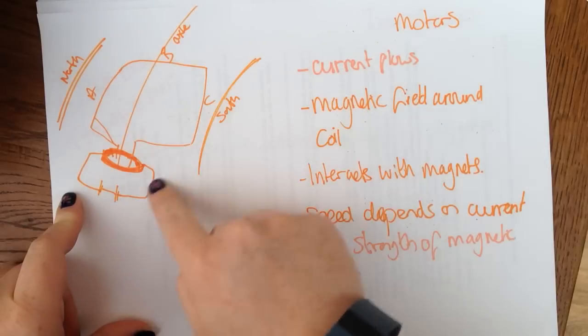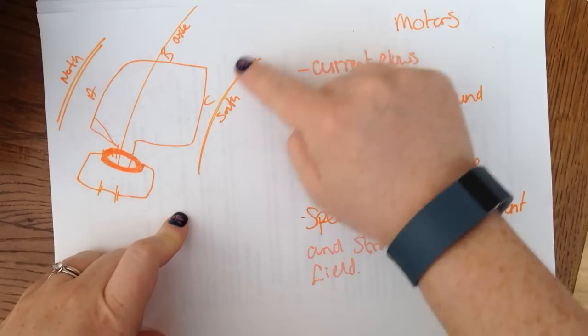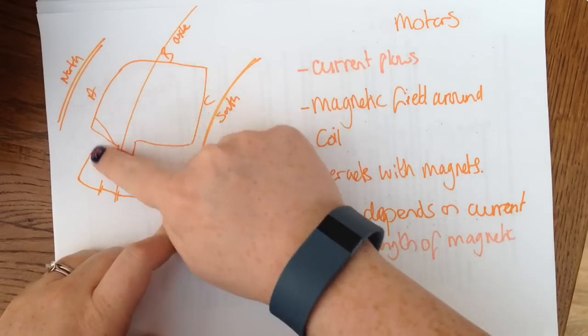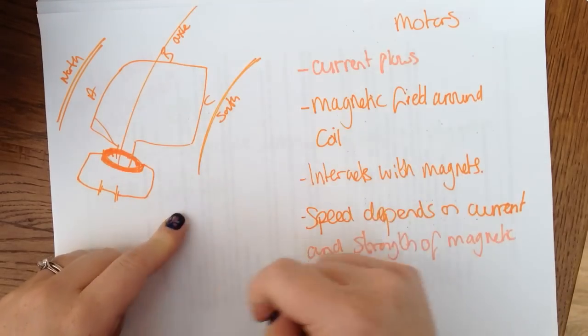So this topic starts off with motors. When we have a current flowing, this produces a magnetic field. Here we have the magnet, and here we're going to have our wire. This is the axle going down the middle.